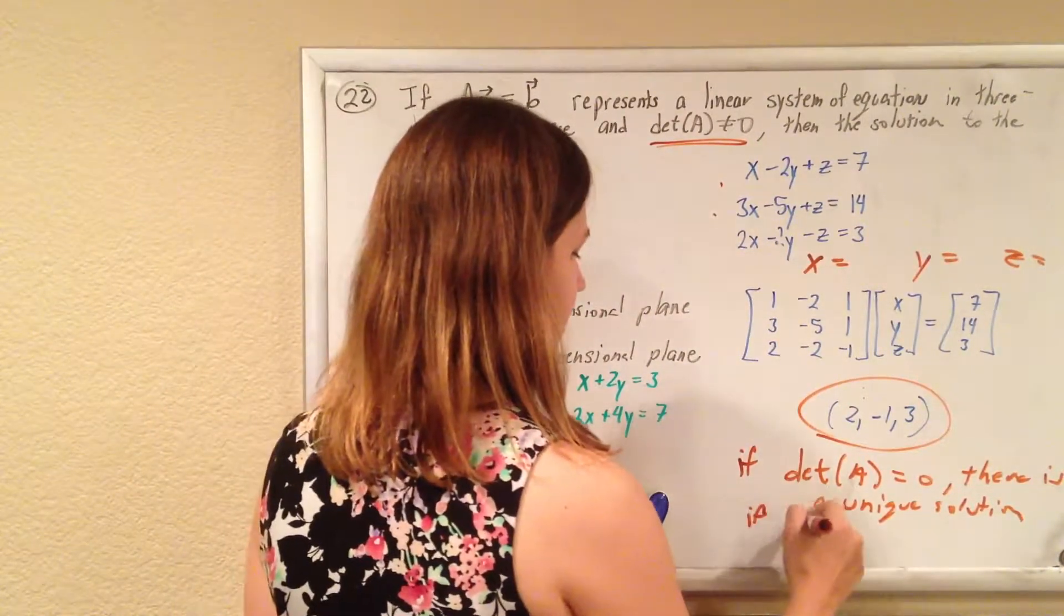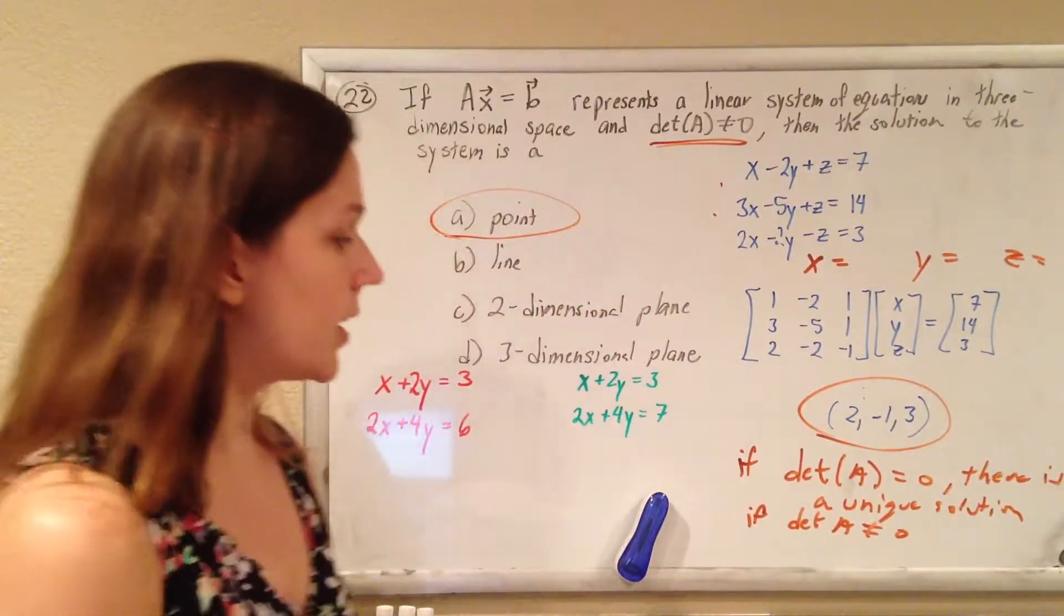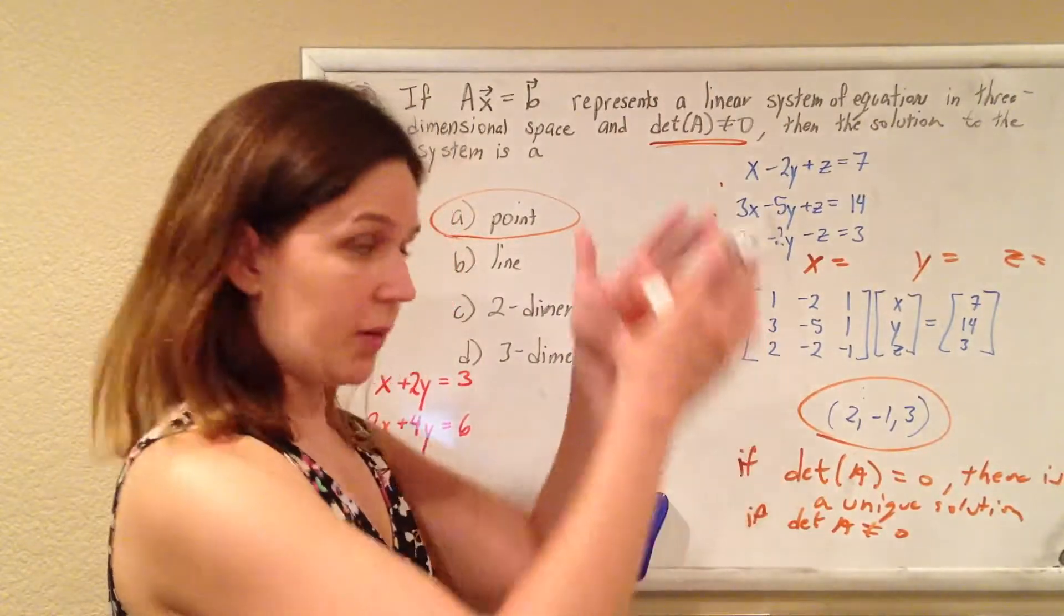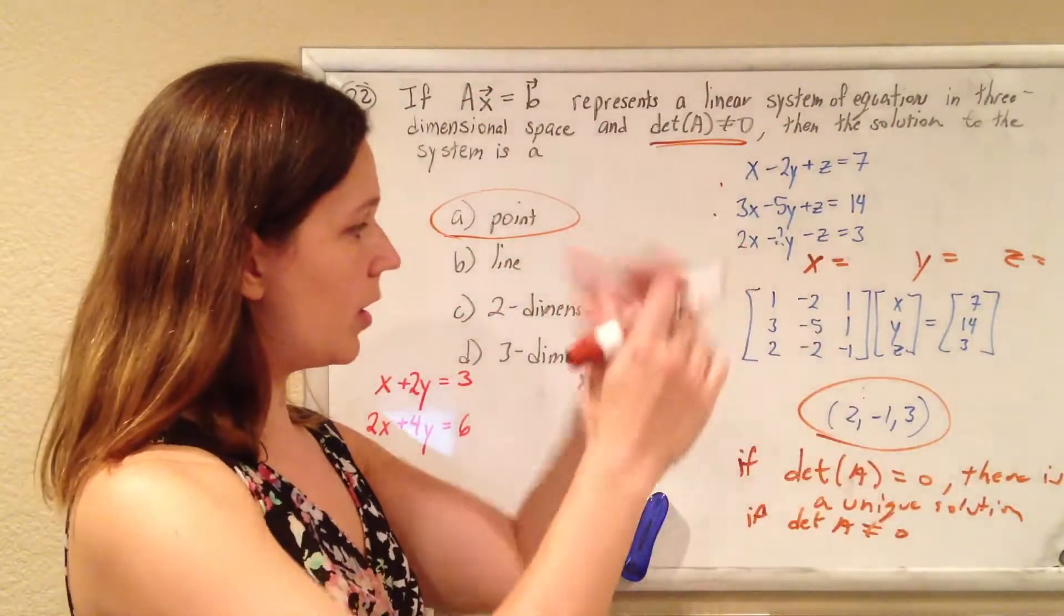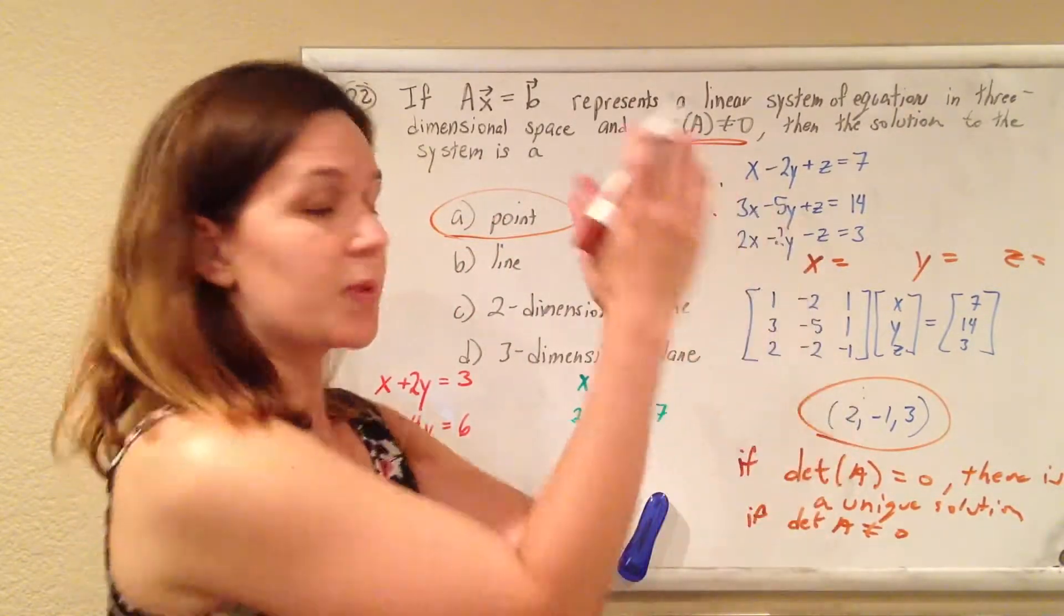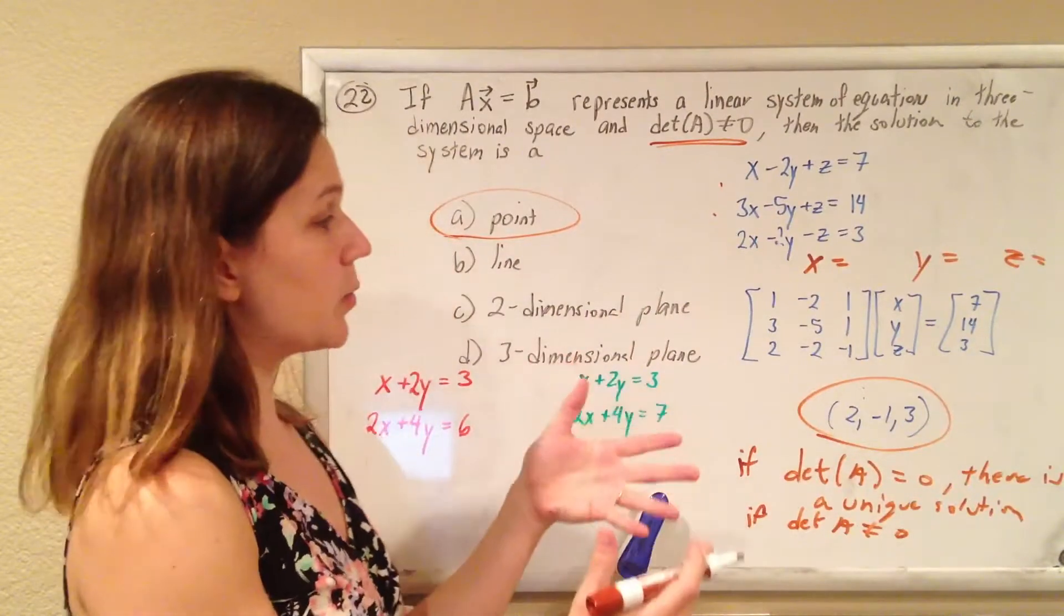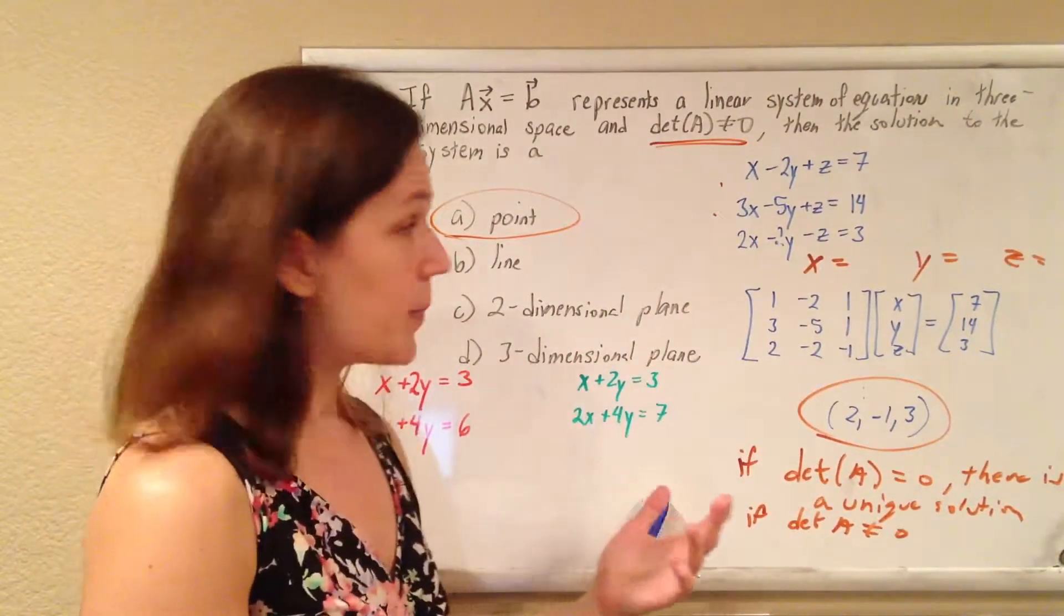And if the determinant does equal zero, that's when you get your funky cases where, like we were saying, either two of these planes are parallel and so they all can't intersect, or maybe two of those planes are the same so they intersect in an infinite number of points, maybe they intersect in a line, and that's what happens.